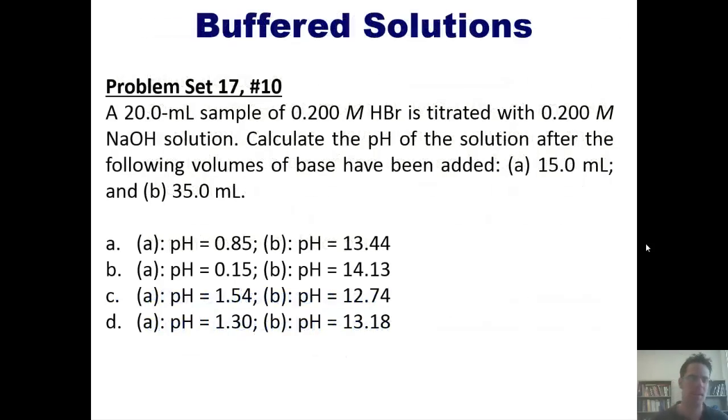Speaking of which, here is one. 20 milliliter sample 0.2 molar HBr is titrated with 0.2 molar NaOH. Calculate the pH of the solution after the following volumes of base have been added, 15 mils and 35 mils. I invite you, if you feel comfortable, to attempt this on your own. And then if you wish, you can click a link here to a separate video, which I'll show you how to do it on the board.